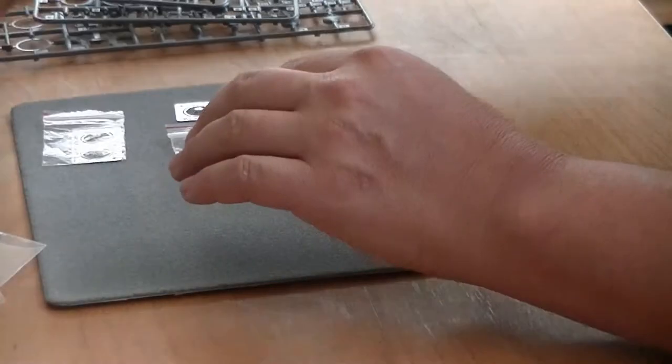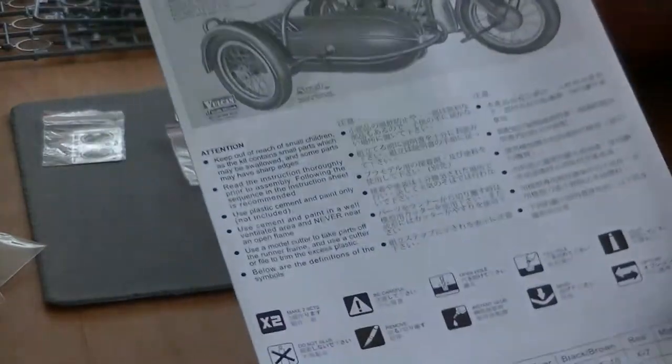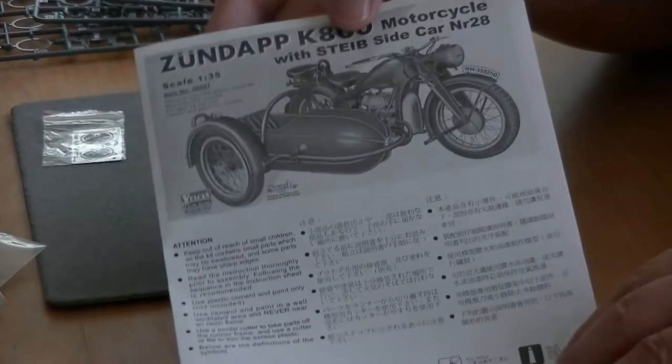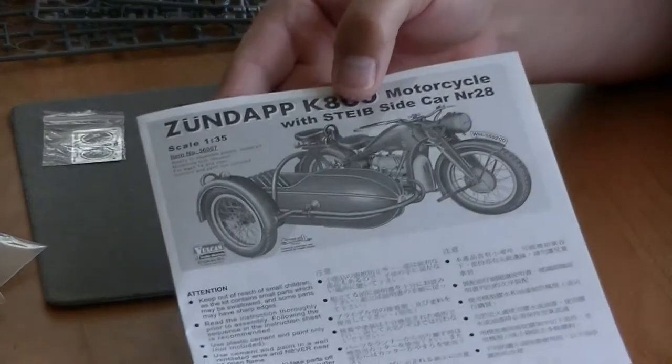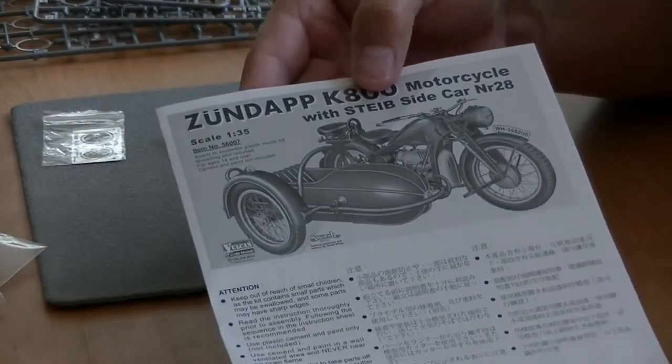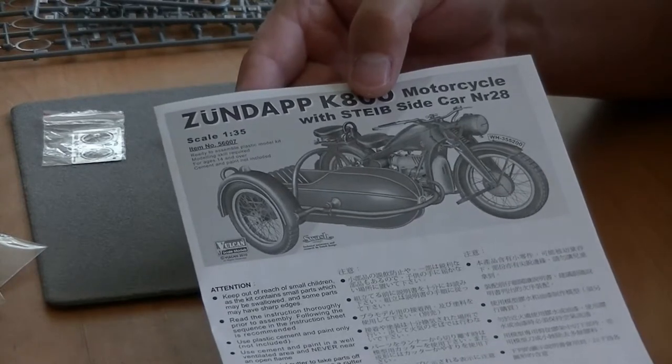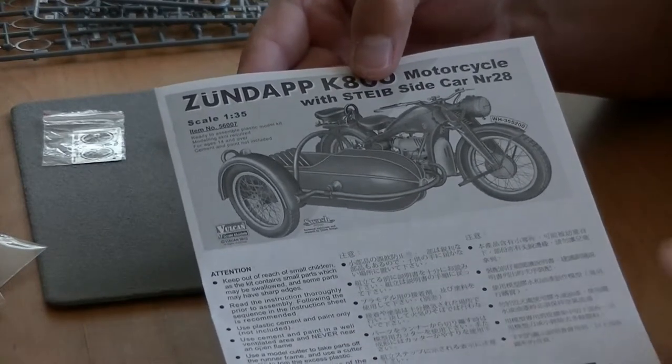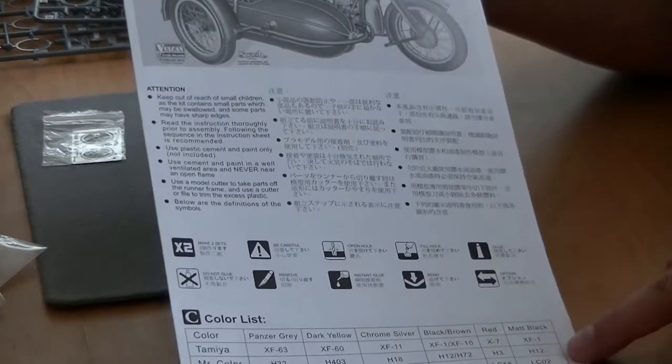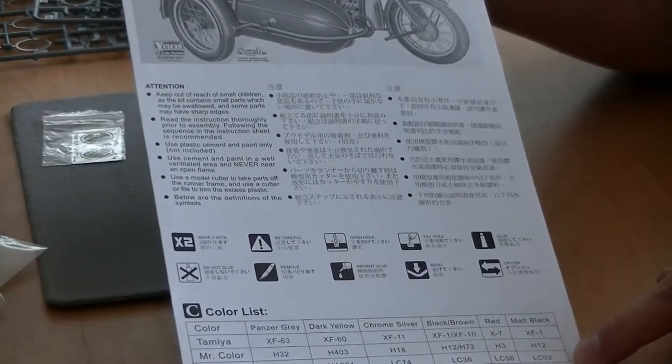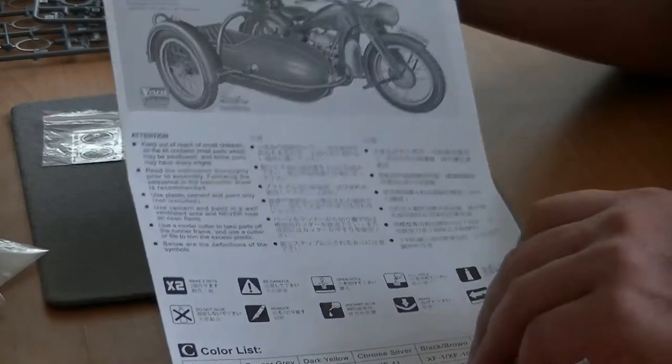Let's go over the instruction sheet, which is in a glossy high quality paper with small warnings. The symbols callouts and the color callouts, which came actually in Tamiya, Mr. Color, and Life Color, which is nice for those using those ranges.